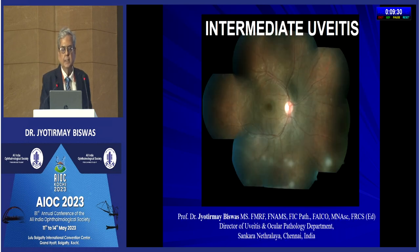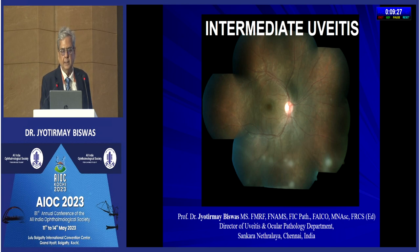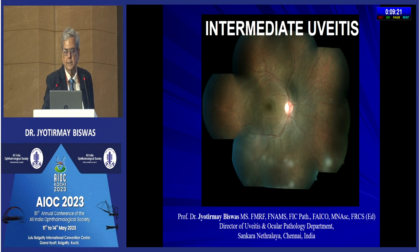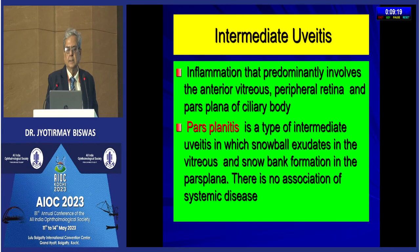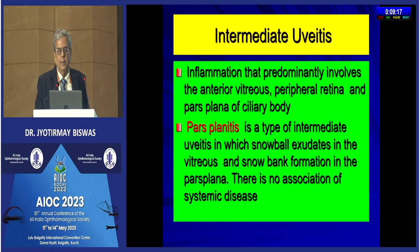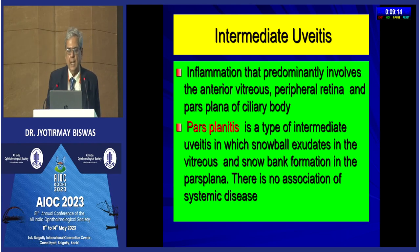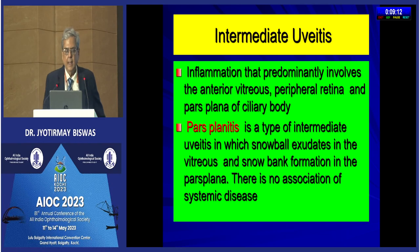This is a scenario of a case of intermediate uveitis. What is intermediate uveitis and how do you manage it? A few salient points I will be highlighting. It is inflammation that predominantly involves the anterior vitreous, peripheral retina, and pars plana of the ciliary body.